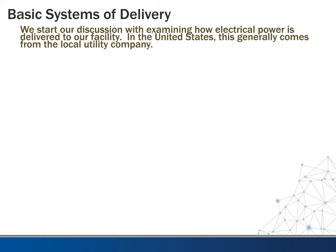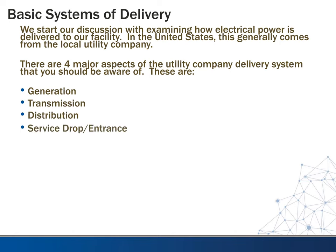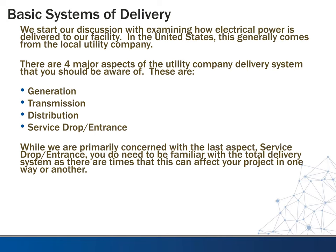We want to start our discussion by examining how electrical power is delivered to our facility. In the United States, this generally comes from the local power utility company. There are four major aspects of the utility company delivery system you should be aware of: generation, transmission, distribution, and service drop or service entrance.